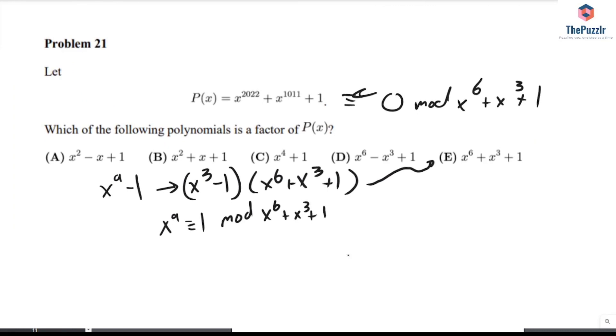Now we can rewrite P(x) in terms of the highest powers of 9. So P(x) equals x to the power of 2016 times x to the power of 6 plus x to the power of 1008 times x cubed plus 1.